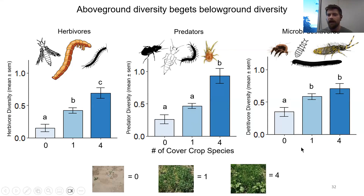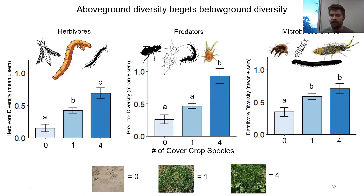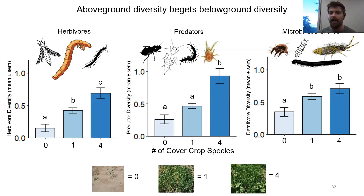When we look at our microbeaters and decomposers, just moving from zero to one cover crop you do see an appreciable increase in decomposer diversity. Whereas moving from one to four cover crop species, you actually don't see a significant increase in biodiversity. This is a way of thinking about how producers can potentially ecologically engineer their agroecosystems to support below-ground arthropod communities with desired functions — such as predators and their ability for biocontrol, or microbeaters and decomposers and their ability to enhance nutrient cycling.